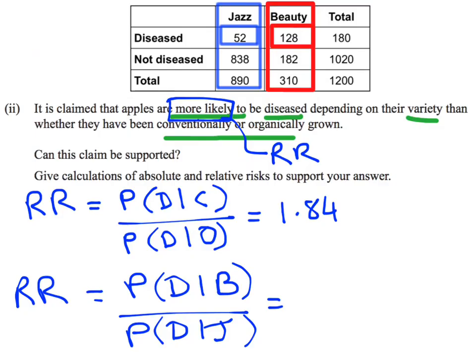When I calculate that, I'm going to get an answer of 7.066. So what we've just found is that if I have a beauty apple, it is 7 times more likely to be diseased than if I have a jazz apple.